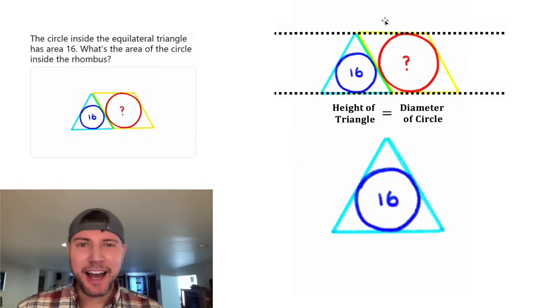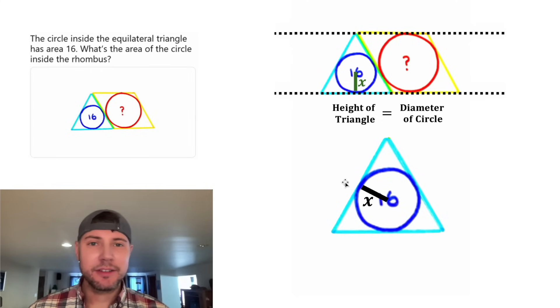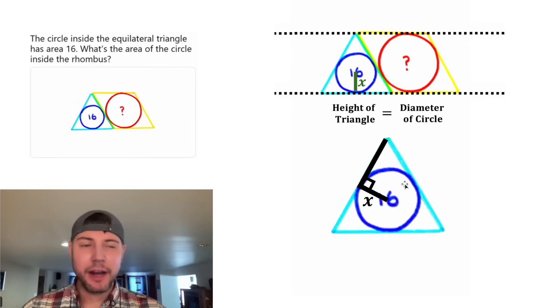So let's focus on the height of the triangle. Let's call the radius of this circle x. That means that this radius would also be x. And if we extend this tangent line to the circle, this will be at right angles. And that's due to the fact that the radius of a circle is always at right angles to a tangent line at this point of tangency.